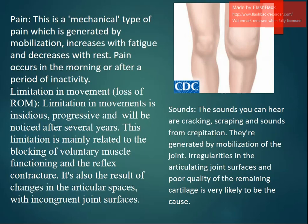The limitation in range of motion is mainly related to blocking of voluntary muscle functioning and reflex contracture, meaning muscle spasm is also a result of changes in the articular space. Crepitus sounds — cracking and scraping — are generated by mobilization over joint irregularities and poor quality of the remaining cartilage.